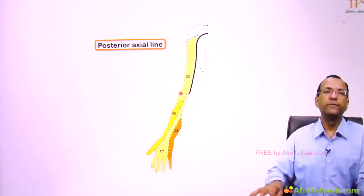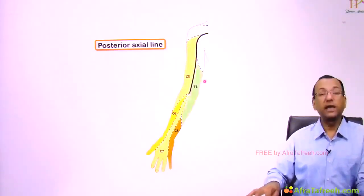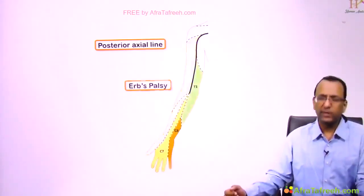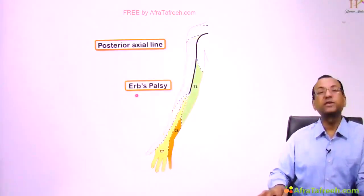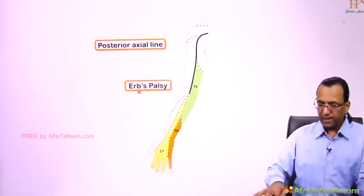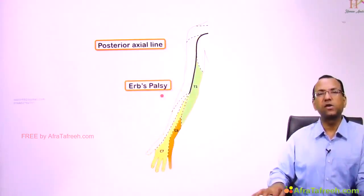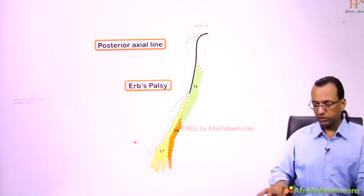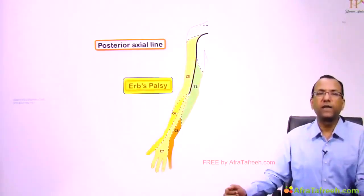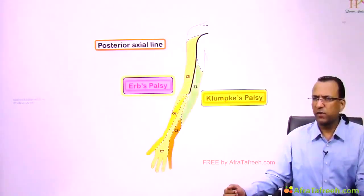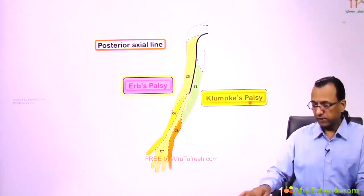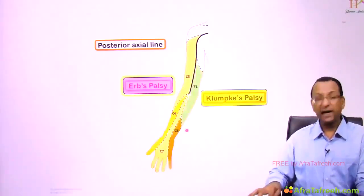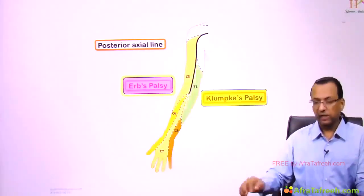In Erb's palsy, when there is injury to C5-6 root values, sensory loss will be on the lateral aspect of the elbow including the thumb side. In Klumpke's palsy, distal root values are affected, so sensory loss will be limited to the medial side of the elbow and the little finger side.